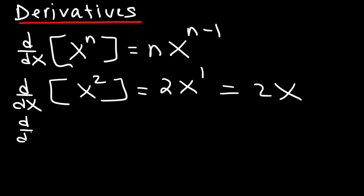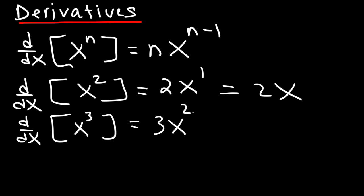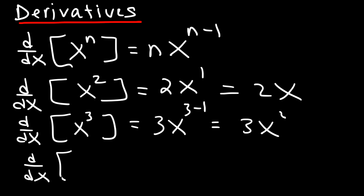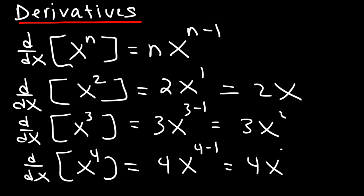The derivative of x cubed: n is 3, so it's 3x to the 3 minus 1, which is 3x squared. And the derivative of x to the 4th power is 4x to the 4 minus 1, which is 4x cubed. That's a simple process for finding the derivative of a function.